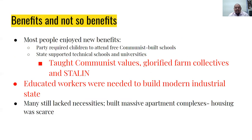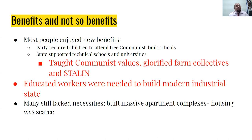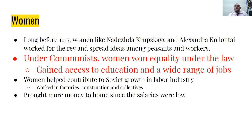Most people enjoyed some new benefits: the party required children to attend free communist-built schools. The state supported technical schools and universities because they needed to industrialize. They taught communist values and glorified farm collectives and Stalin. Educated workers were needed to build a more modern industrial state. However, many still lacked necessities. The government built massive apartment complexes but housing was scarce. Wages were kept low, working hours were long, working conditions were horrible, and living conditions generally sucked.